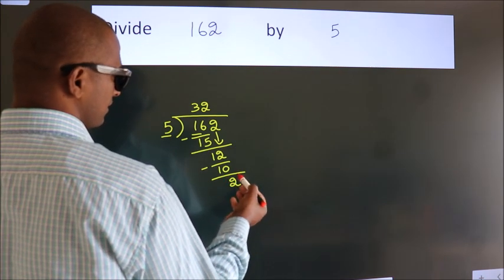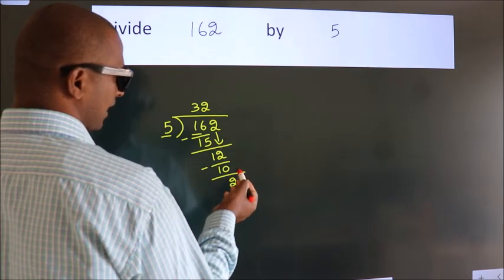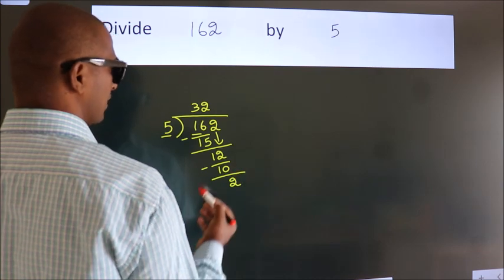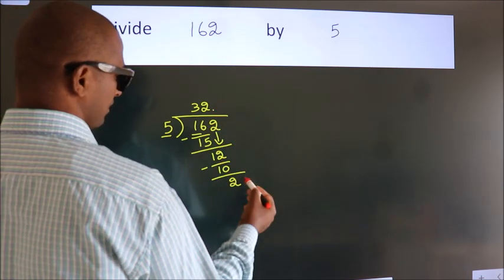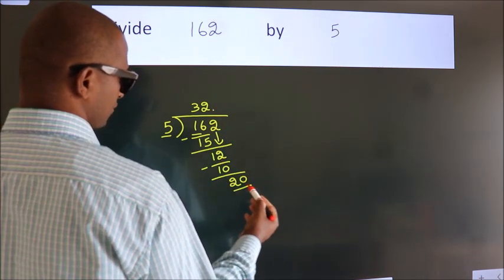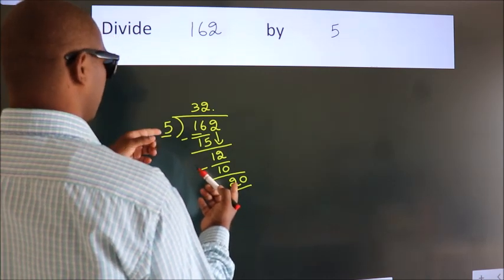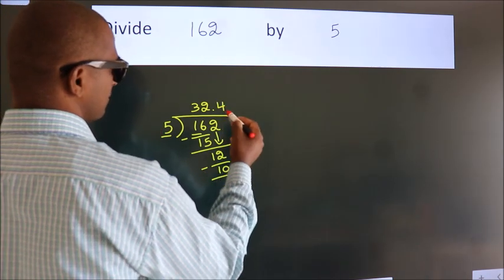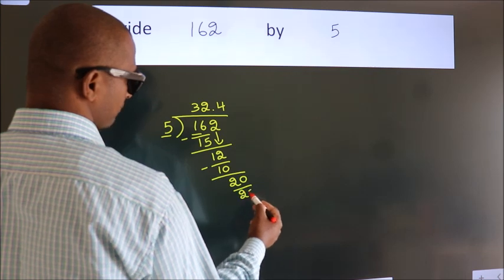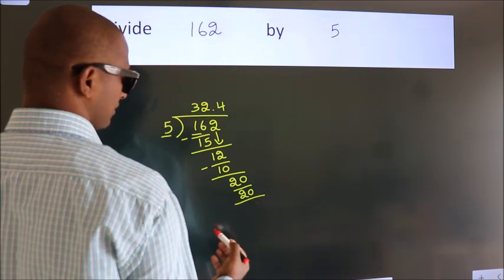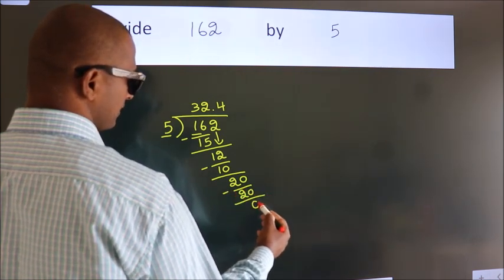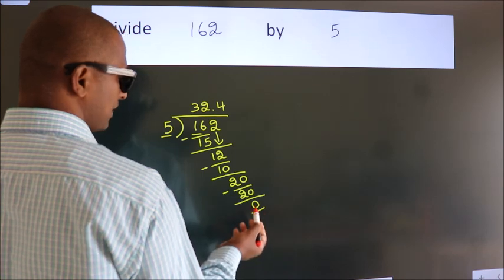After this, no more numbers to bring it down. So, what we do is, we put dot, take 0. So, 20. When do we get 20? In 5 table. 5 fourths, 20. Now, we subtract. We get 0. We got remainder 0.